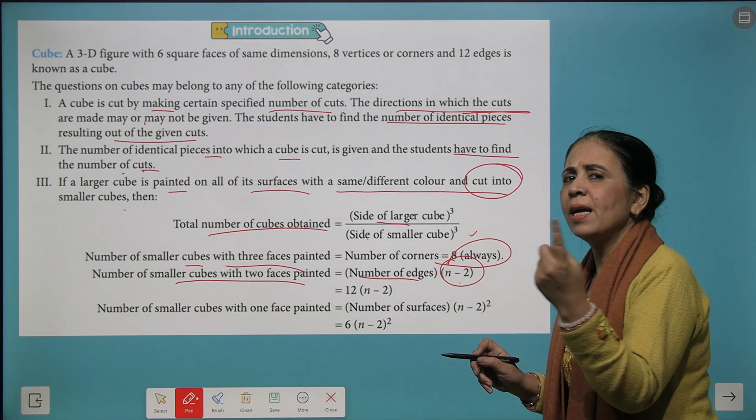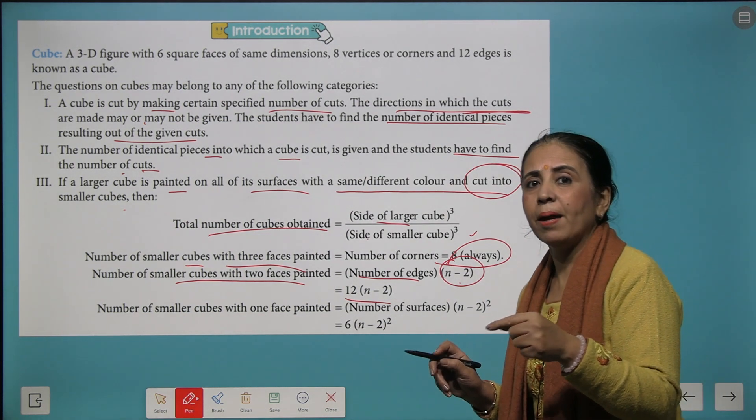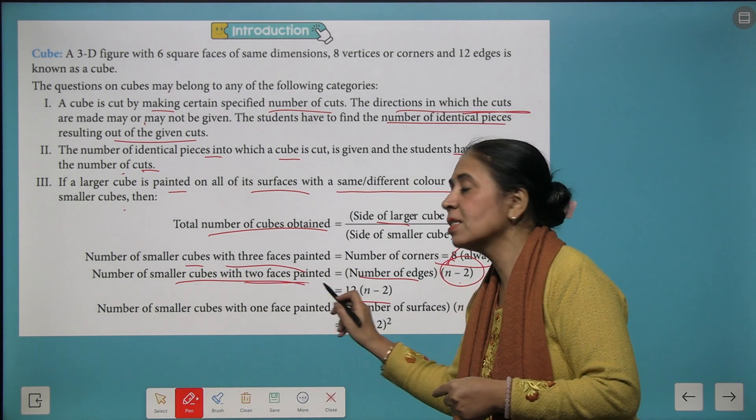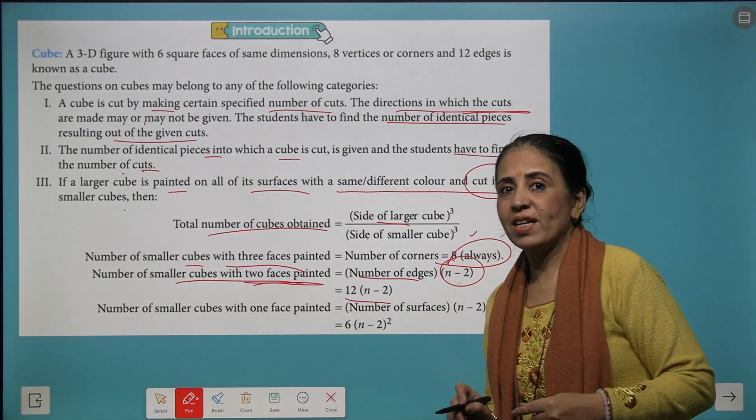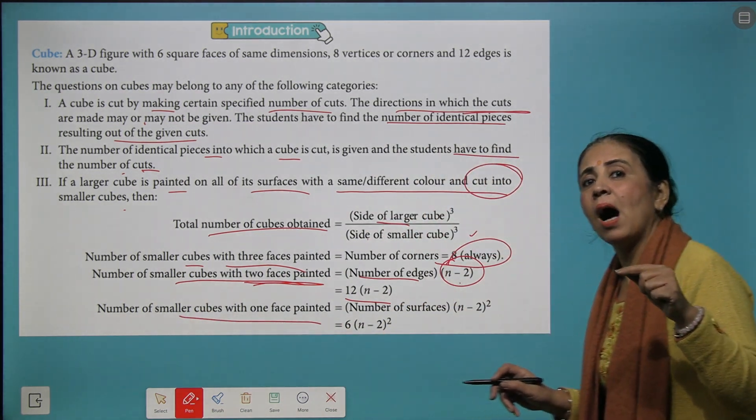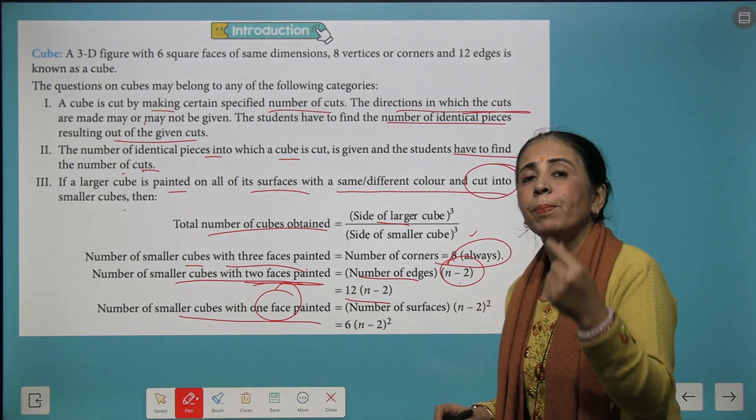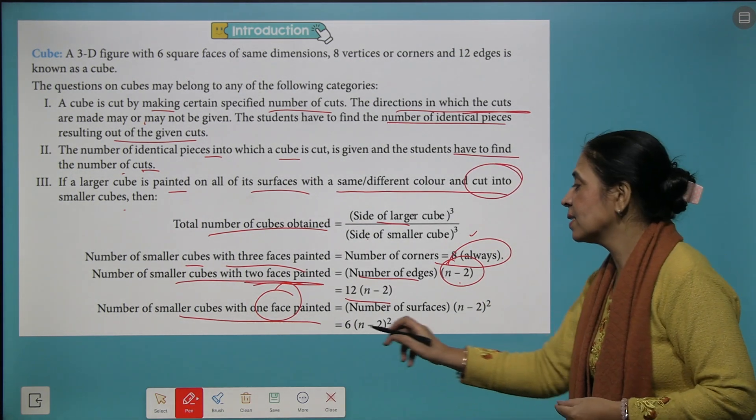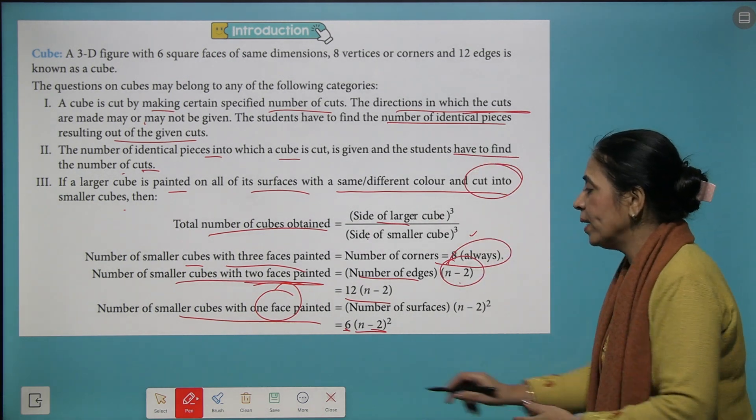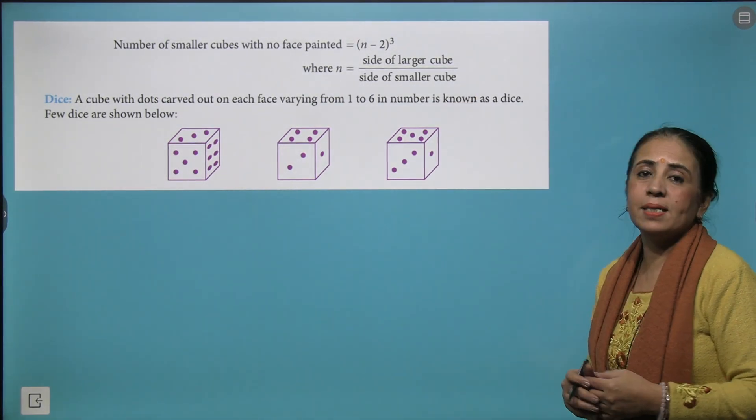So we get 12 times n minus 2 will be the number of cubes with 2 faces painted. And when you want to find that how many cubes will have only 1 face painted then it will be 6 times n minus 2 squared. So once you remember these formulas the questions become easy.